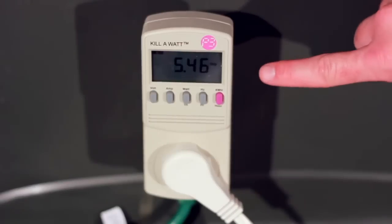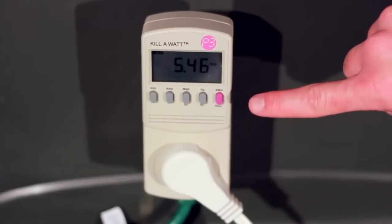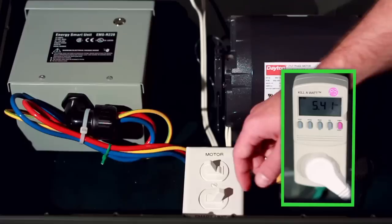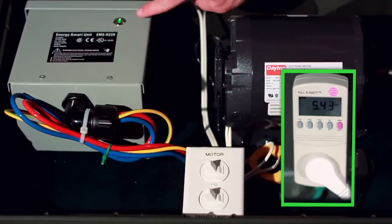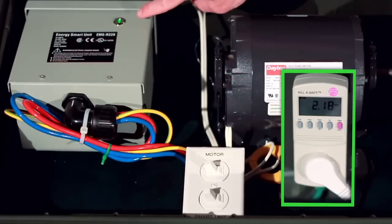Notice the number of amps being drawn from the meter. According to the meter, we're currently using about 5.46 amps. Alright, the green light is on. It's working and wow, now we're only pulling 2.18 amps.